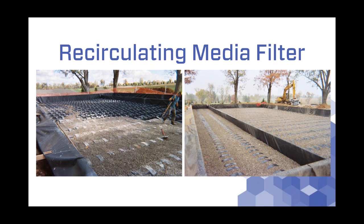Distribution laterals are put over top of the treatment medium after it's placed. When we dose — for example, 100 gallons to the entire system — on the 80% side, 80 gallons will be returned through the underdrain system back to the recirculation pump tanks and re-dosed out into the system numerous times per day, so the effluent is of higher quality. The 20% side — 20 gallons of that 100-gallon dose — goes out to final dispersal, in this case the drip irrigation system. That's how we make a quick, easy split of the effluent for our recirculation rates.